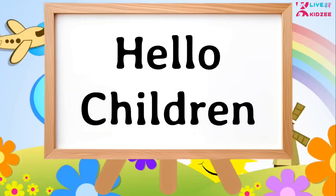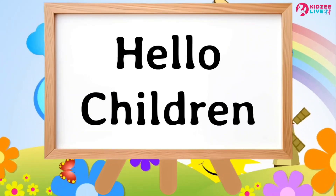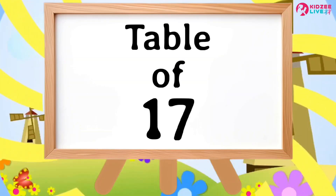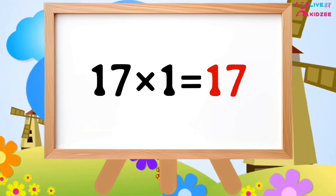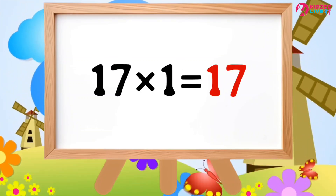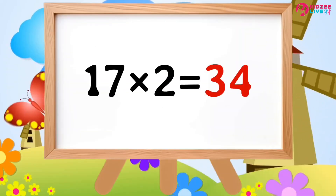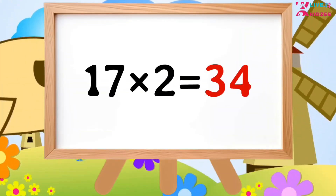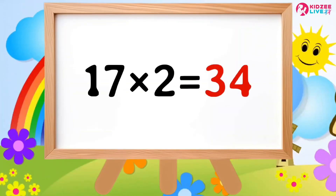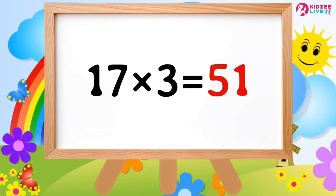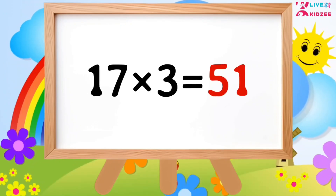Hello children, let's learn table of 17. 17 1's a 17, 17 2's a 34, 17 3's a 51.